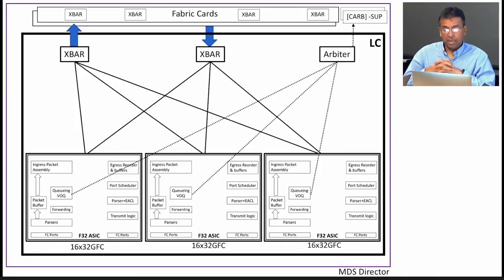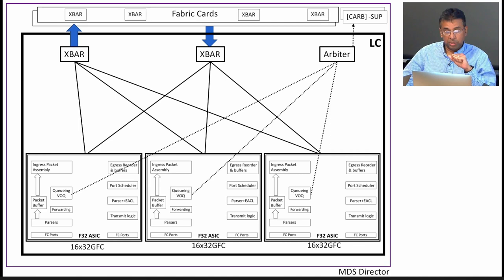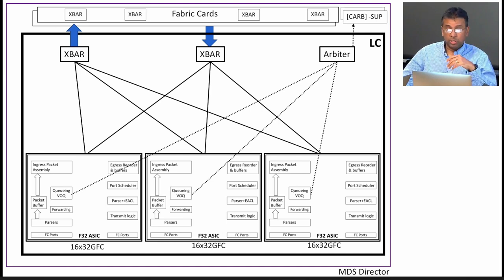Let me walk you through the MDS architecture. This slide shows a line card. MDS has a highly scalable architecture — you can see three 32 Gig Fiber Channel chips that connect to the crossbar. Those crossbar chips allow a high-bandwidth connection to the fabric cards on the back. The fabric cards are highly redundant, so if one goes down the others carry the load. There is also an arbiter chip that provides fairness across all ports and is non-blocking.